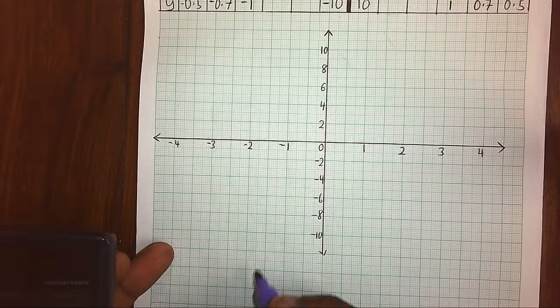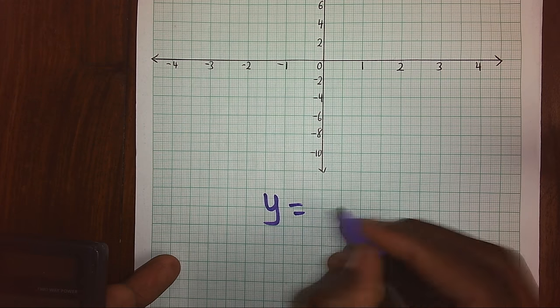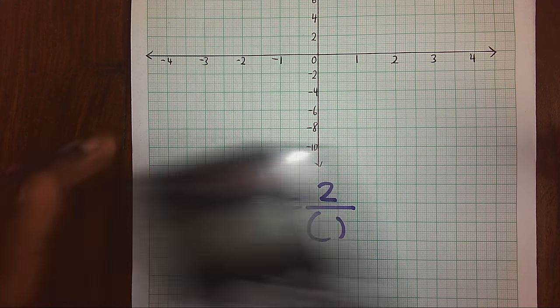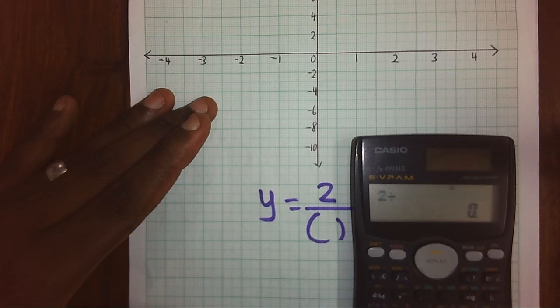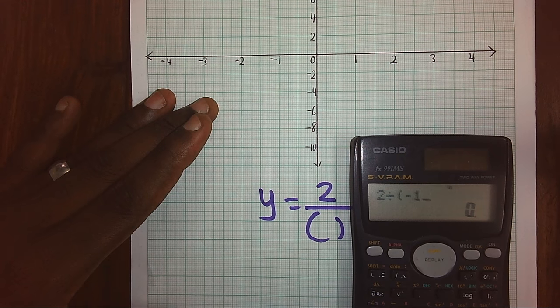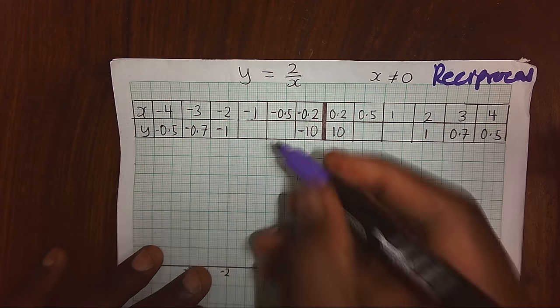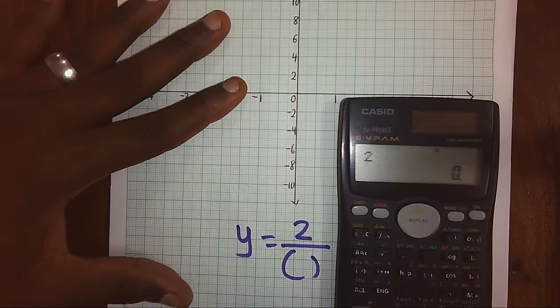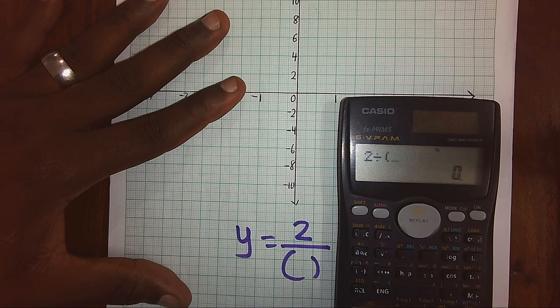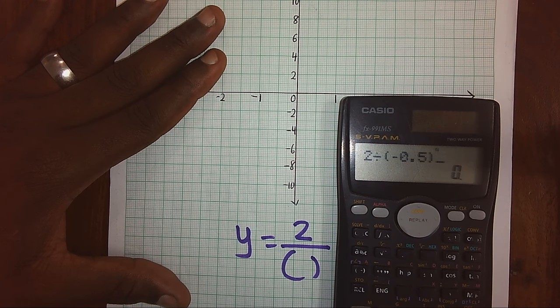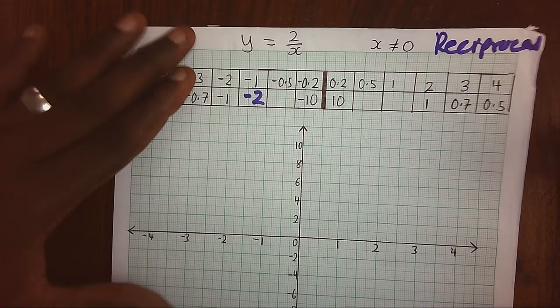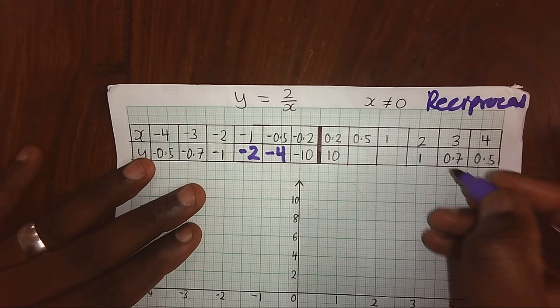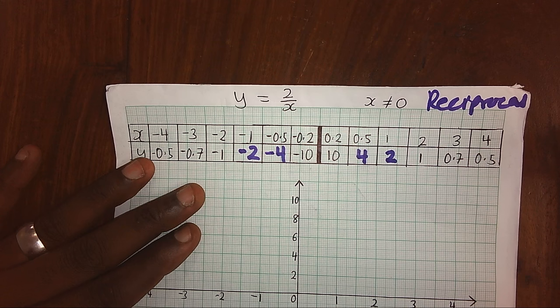Our equation is giving us h of x equals 2 over x. On the place of x, that's where we shall keep our x values. Our first x value: 2 divided by open bracket negative 1 close bracket gives us negative 2. So we shall replace there with negative 2. Then we have 2 divided by negative 0.5, giving us negative 4. So we shall replace there with negative 4. That's how we find the values for the other points.